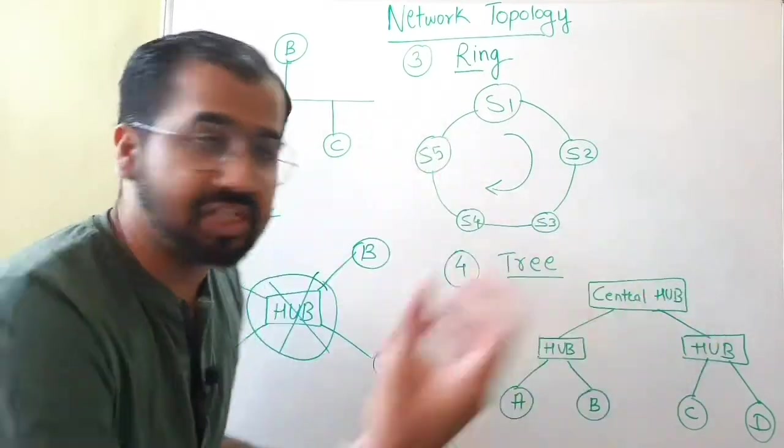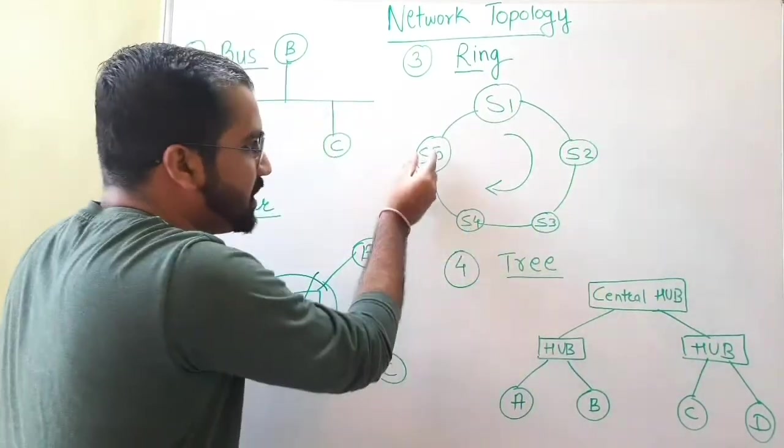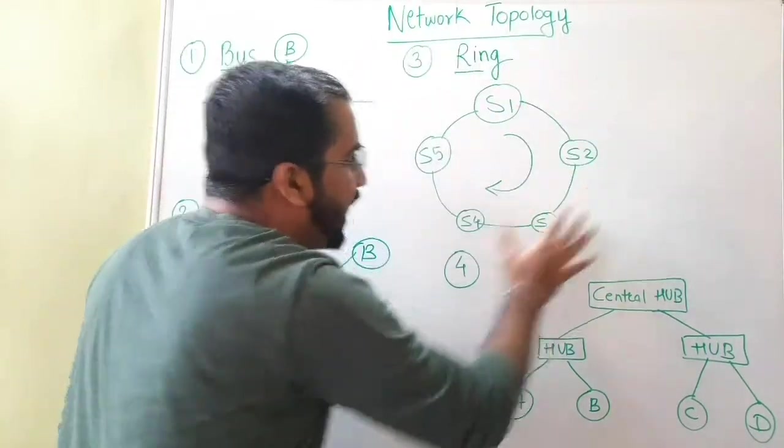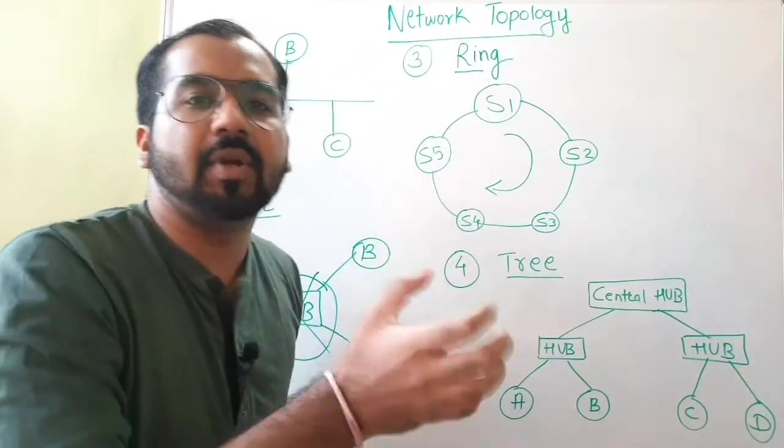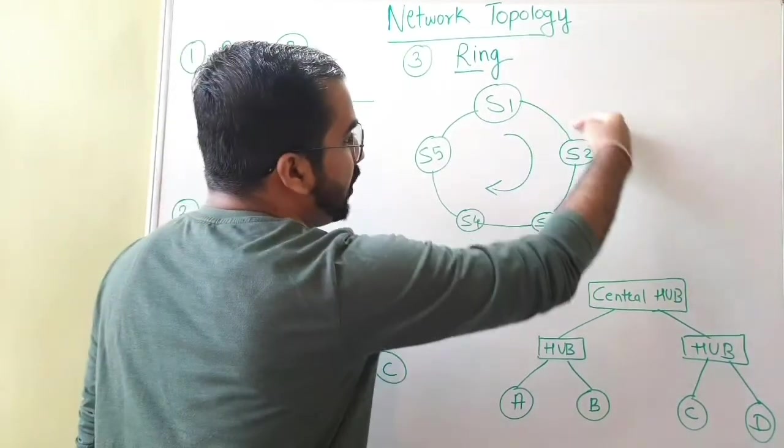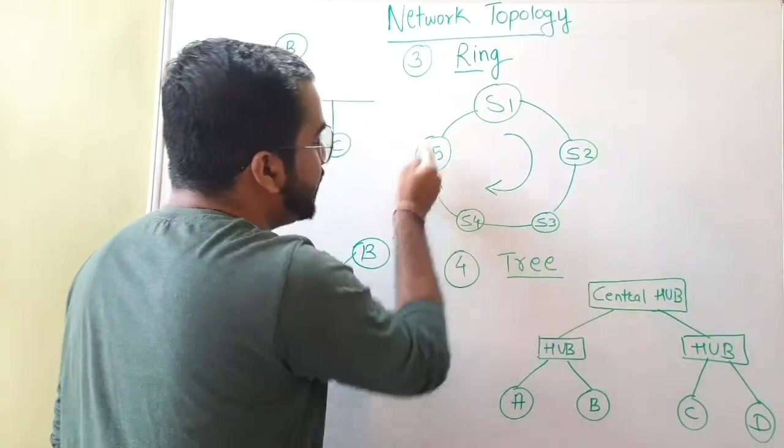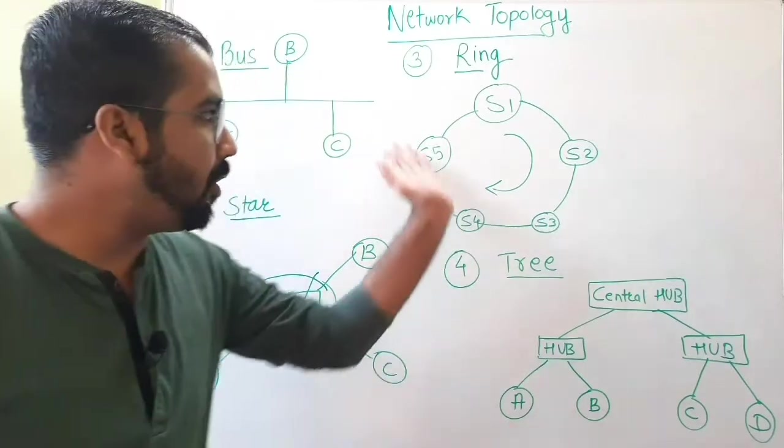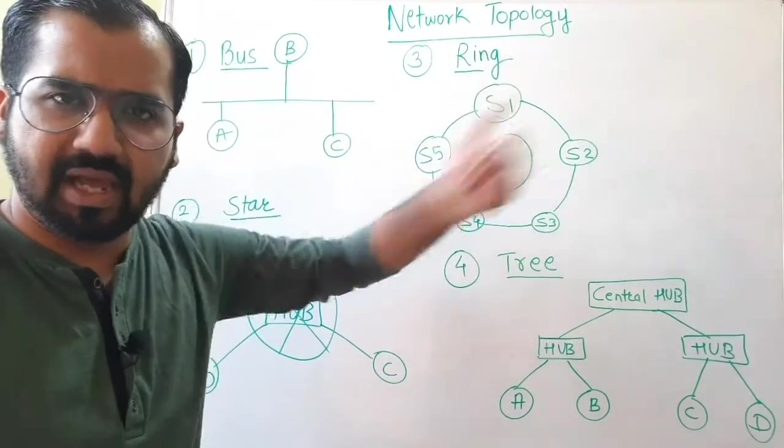We can call them as stations: station one, station two, station three, station four, station five. And all of them are arranged in a ring shaped topology. And this is the links they are sharing. This is the links by which they are connected and forming a circle like shape, ring like shape.